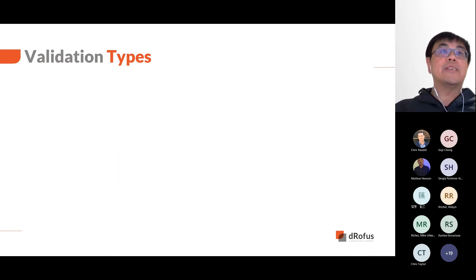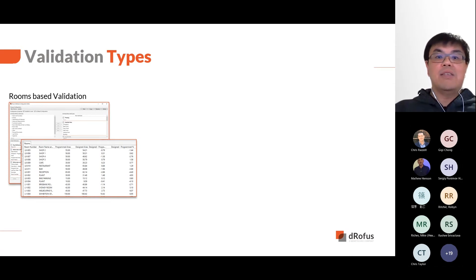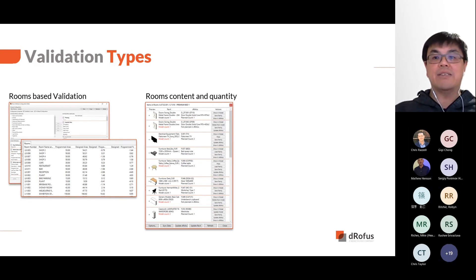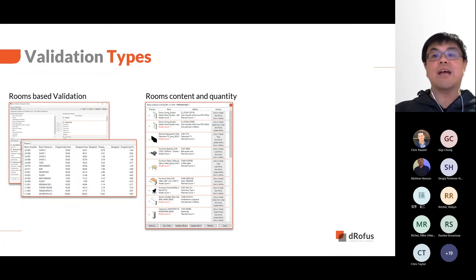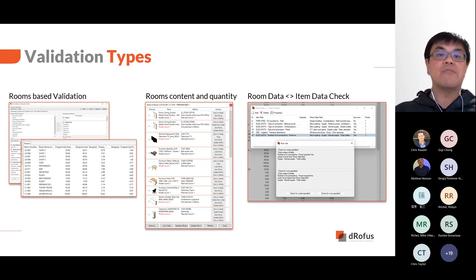We will be doing three demonstrations today. The first is a room-based validation where we will look at different ways we can compare briefed areas and designed areas. The second is confirming quantities of items in rooms between brief and design, demonstrated using the Revit add-on and dRofus Web with IFC models. The third is to demonstrate how to use room data and item data fields for validations — our example is to verify if there are sufficient GPOs or power sockets in a room.